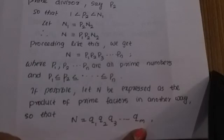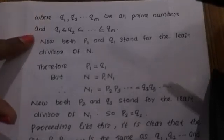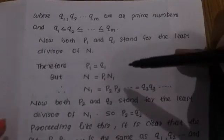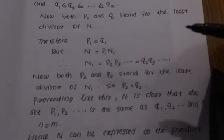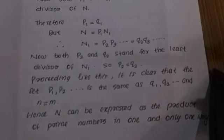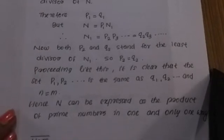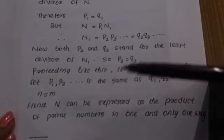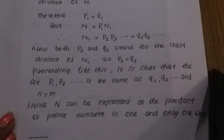Proceeding like this, it is clear that P1 equals Q1, and the set of primes is the same as Q1, Q2, etc. Hence n can be expressed as a product of prime numbers in one and only one way, proving the Unique Factorization Theorem.